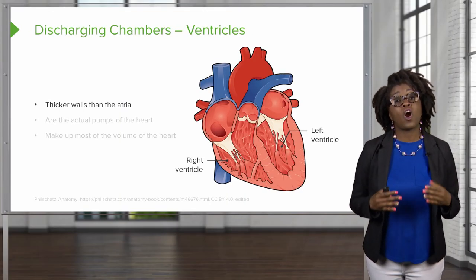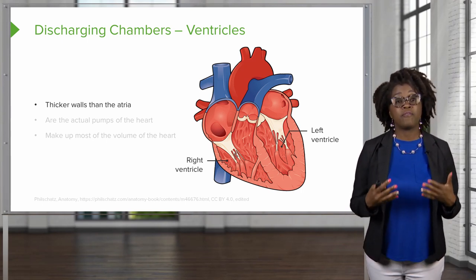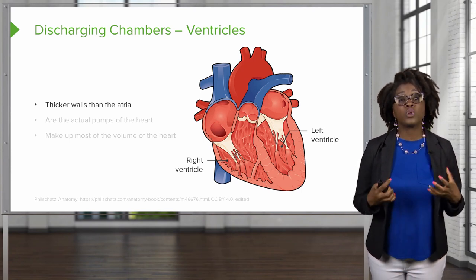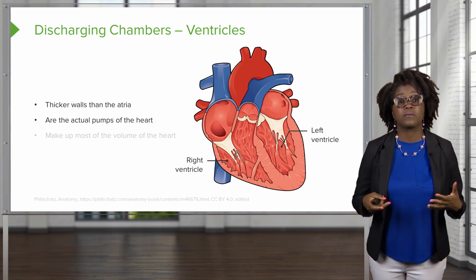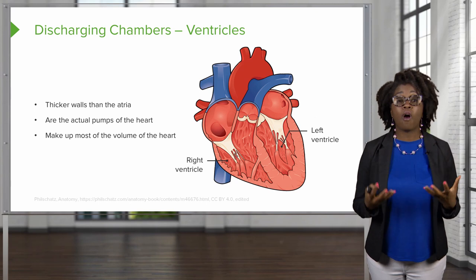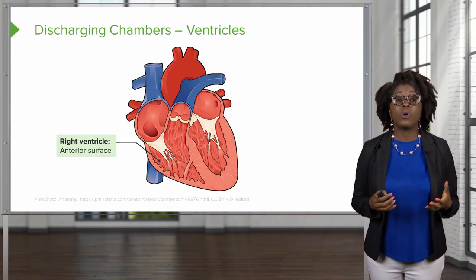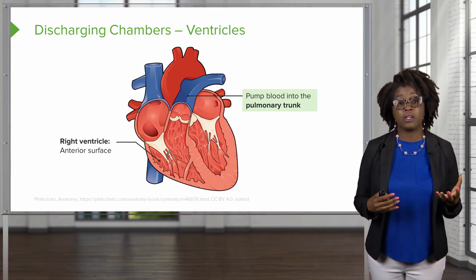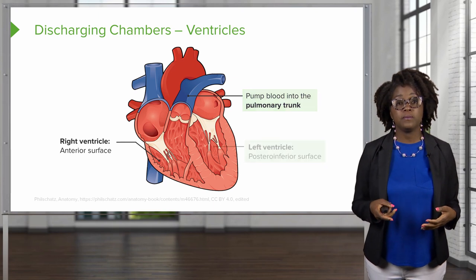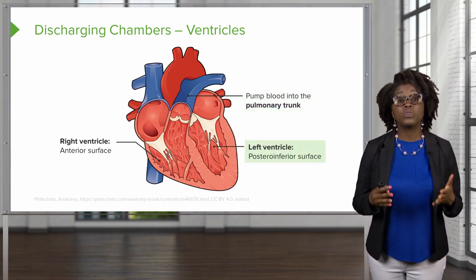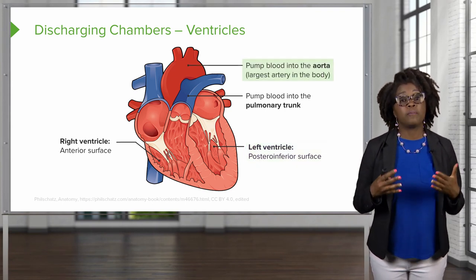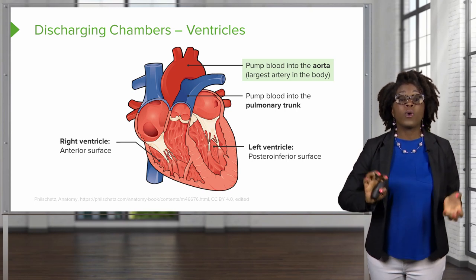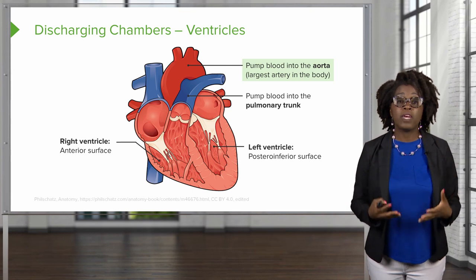The next chambers are our discharging or pumping chambers, referred to as ventricles. These have much thicker walls than the atria because they are involved in the actual pumping of the heart, and they make up most of the volume of the heart. The right ventricle is on the anterior surface of the heart and pumps blood into the pulmonary circuit by way of the pulmonary trunk. The left ventricle is located on the posterior inferior surface of the heart and pumps blood into the aorta, the largest artery in the body, which is responsible for delivering blood to the body's tissues by way of the systemic circuit.